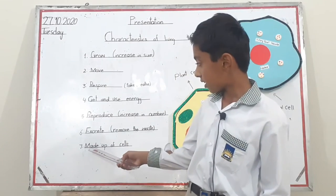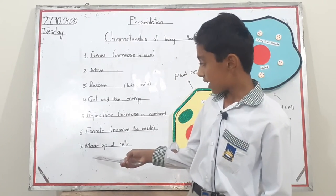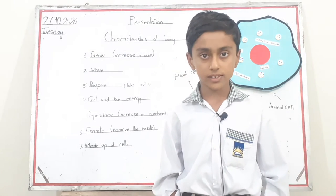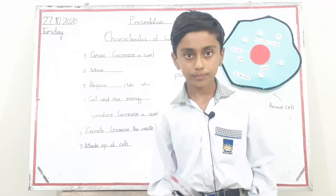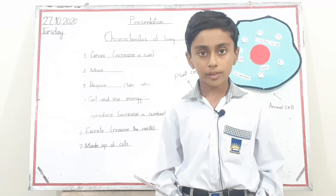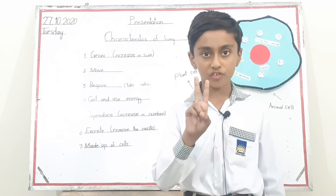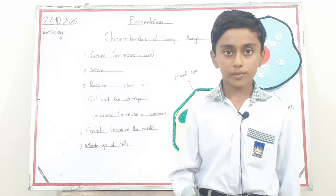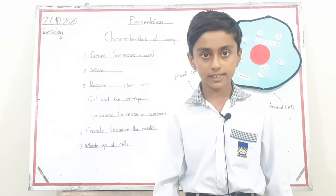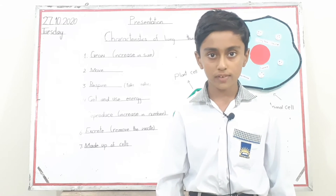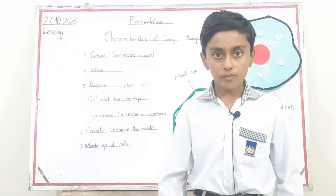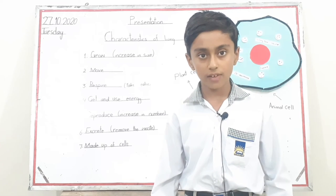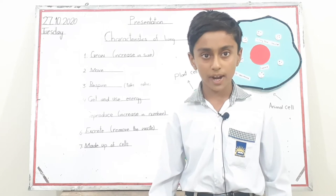The seventh characteristic is made up of cells. All living things are made with cells. There are two types of cells: animal cell and plant cell. Cell is the basic unit of life. Cells are very small — we cannot see cells with our eyes; we can see them with the help of a microscope.